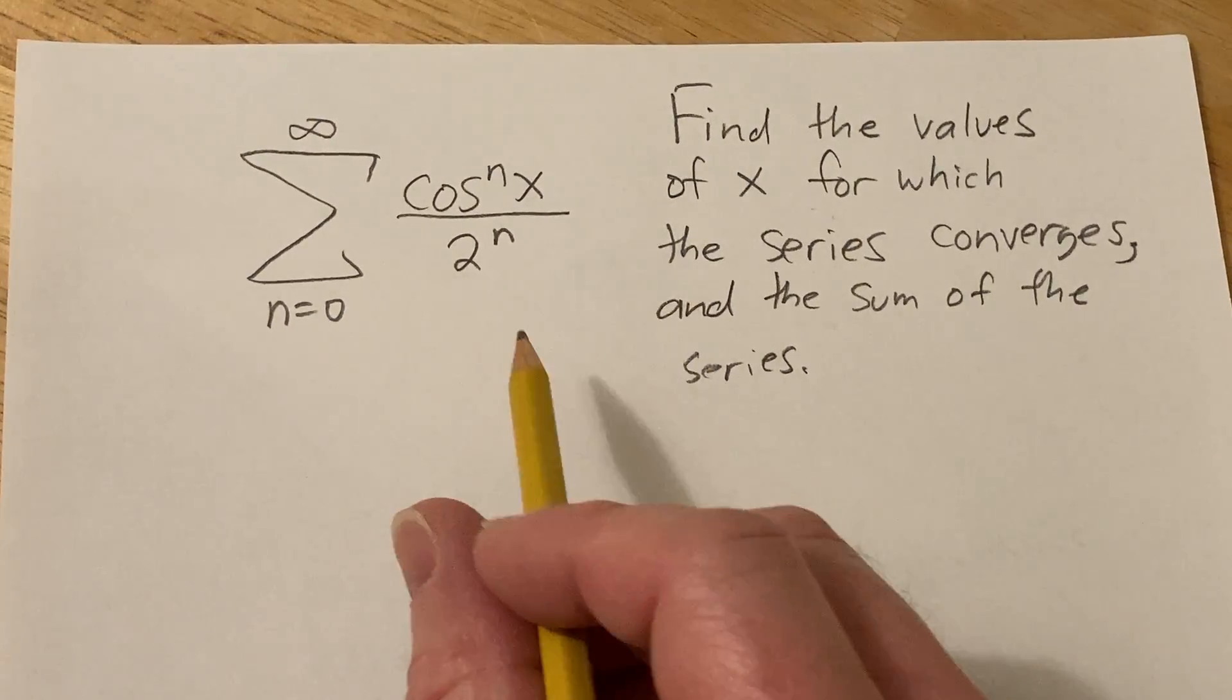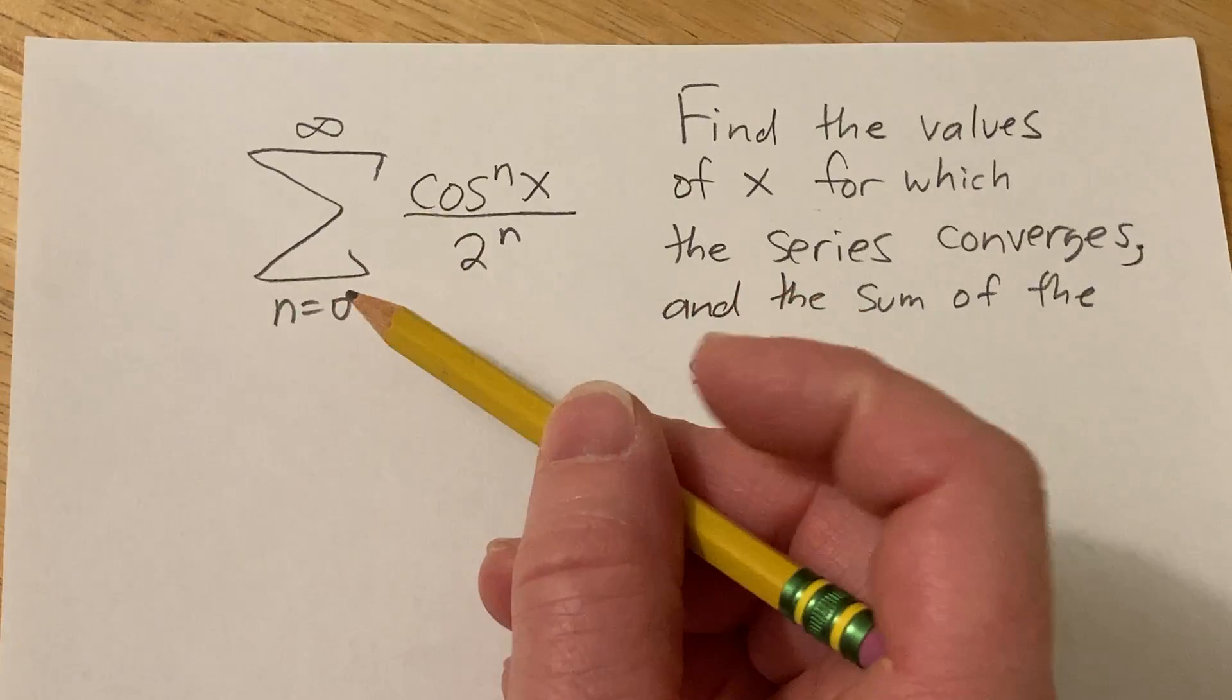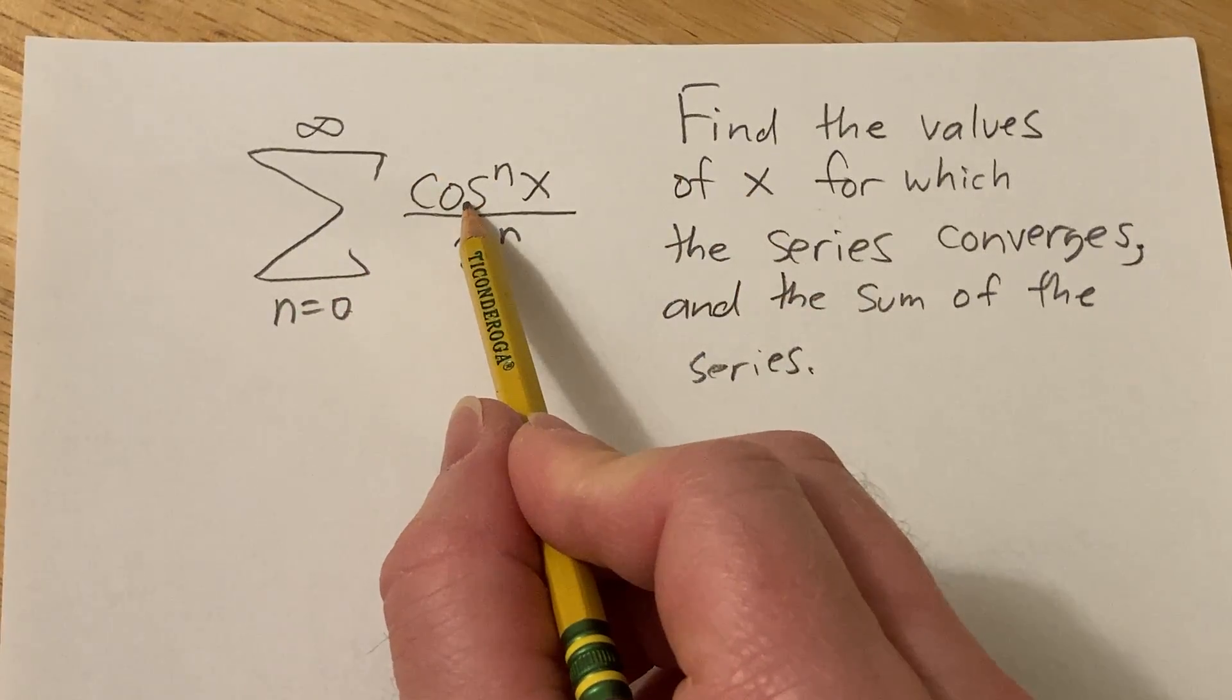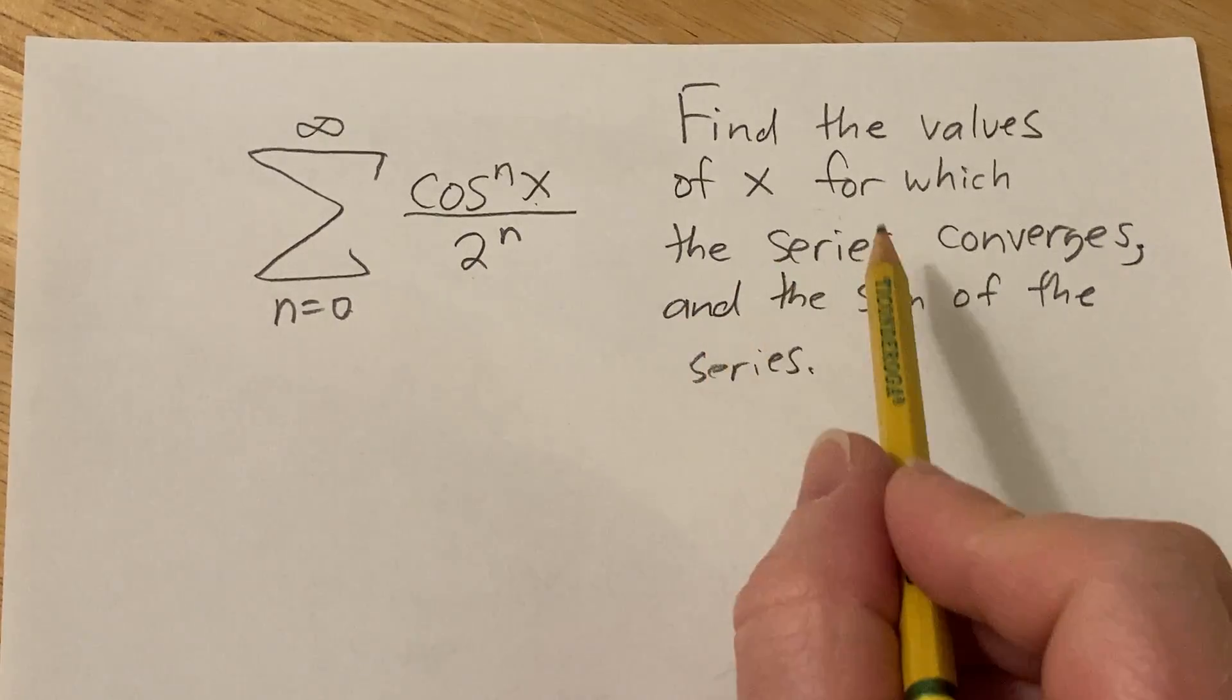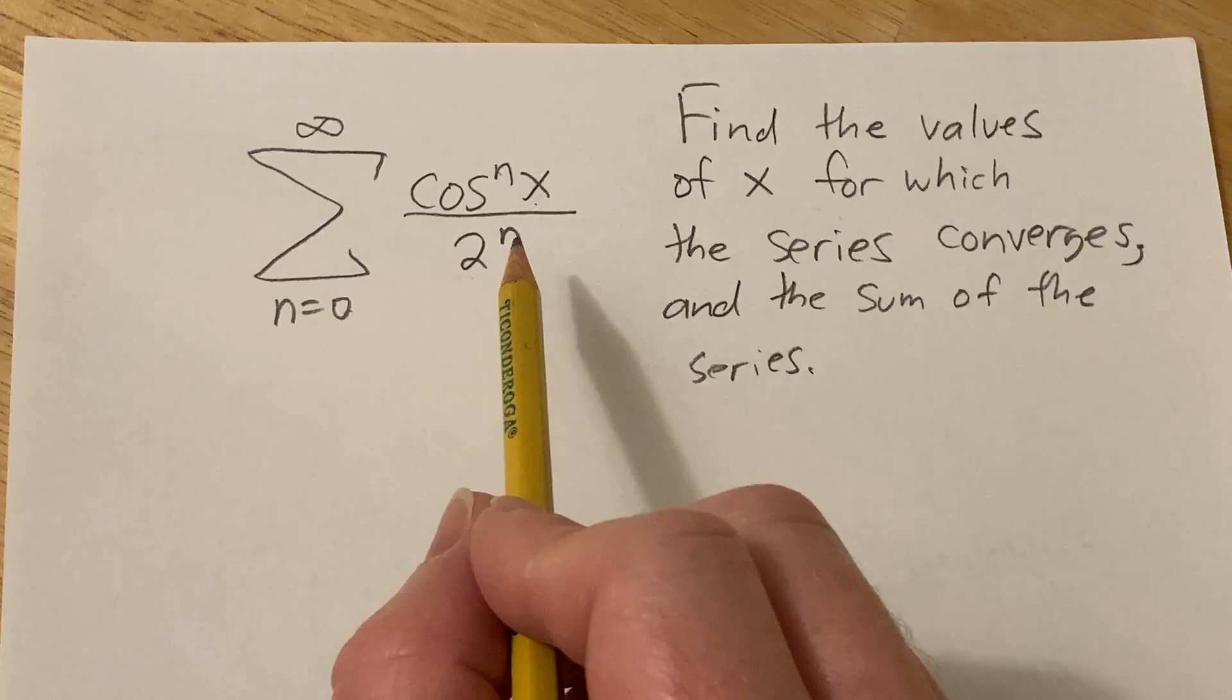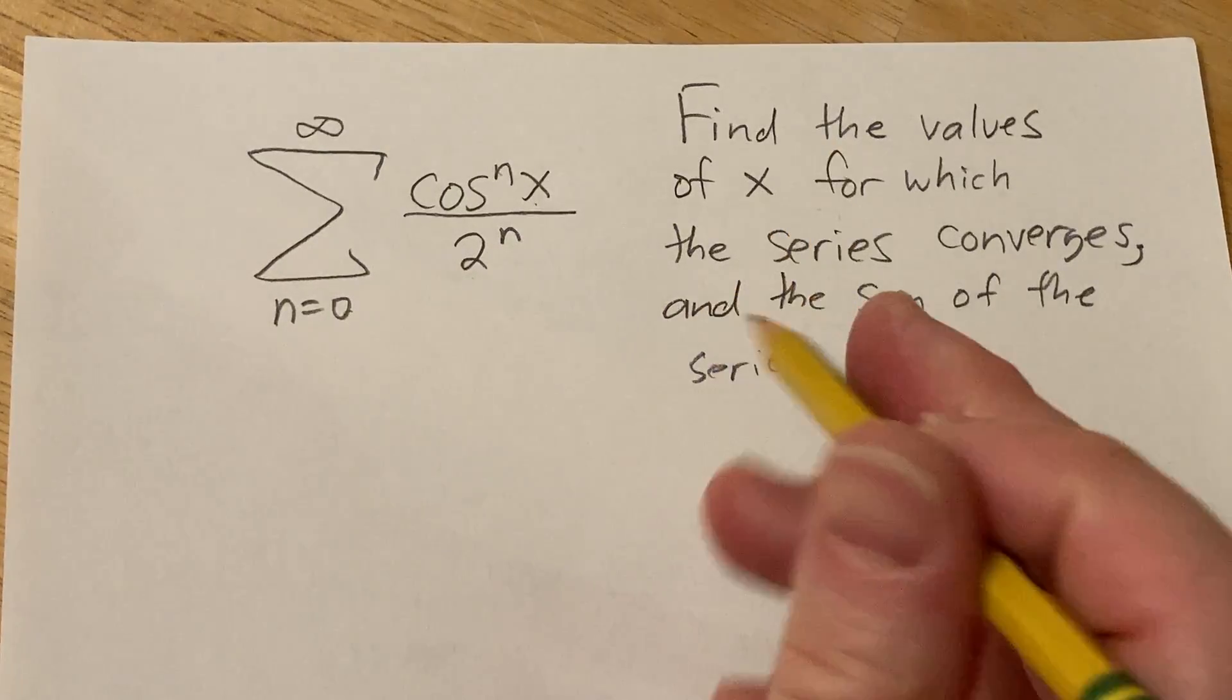Hi, in this video we're going to be doing a series problem. So we have this infinite series that goes from 0 to infinity, and it's cosine of x to the nth power over 2 to the nth power. And the question wants us to find the values of x for which this series converges, and it also wants us to find the sum of the series.